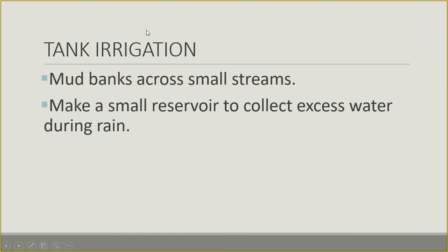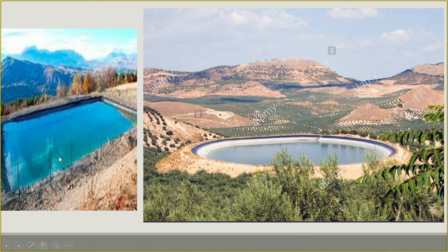The last method of conventional irrigation is tank irrigation. Mud banks were built across small streams to collect excess water during rain, acting as small reservoirs. Once the rain ended, this stored water could be used for irrigation later on.